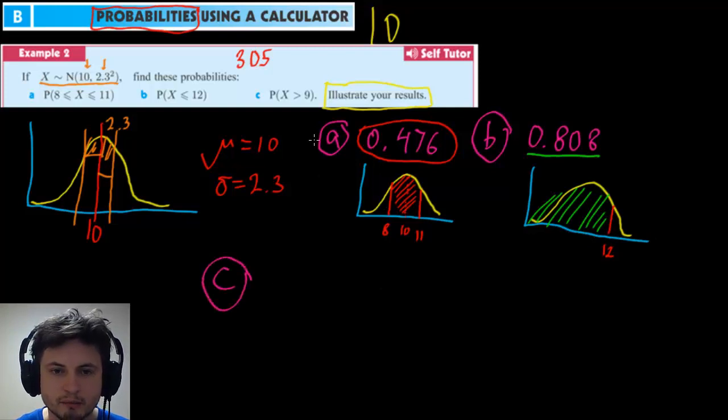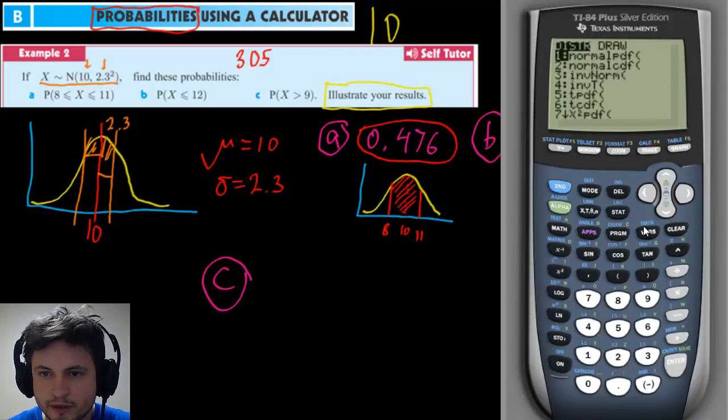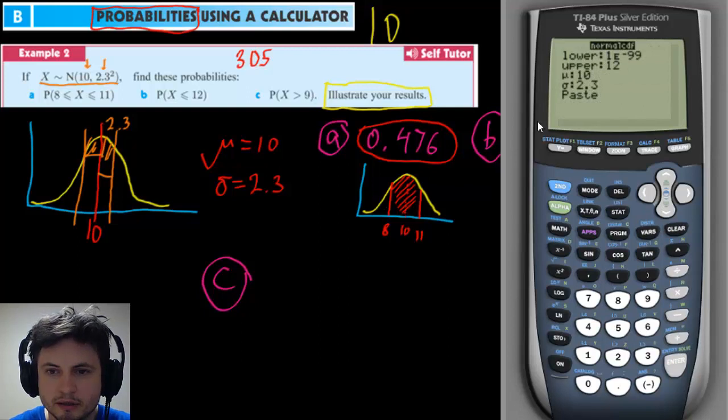So question C is a little bit different. So here we're looking at more than but not equal to nine. So go to vars again go click on normal distribution and let's think about this. So lower value is nine but not including nine. So it's actually nine but it's something like nine point zero zero zero zero zero one.